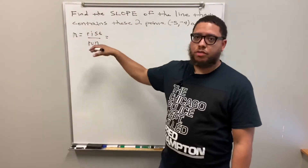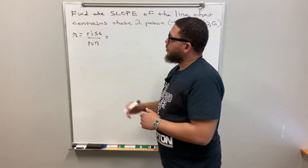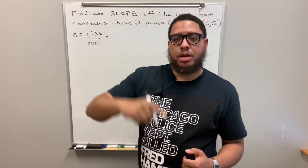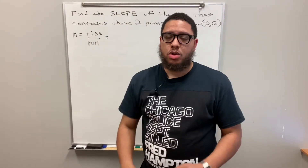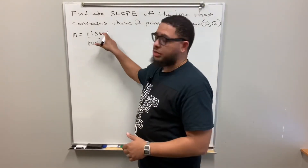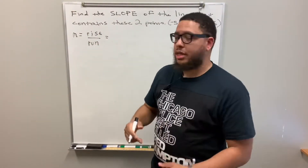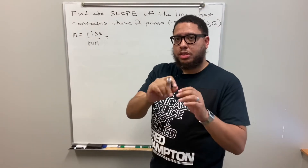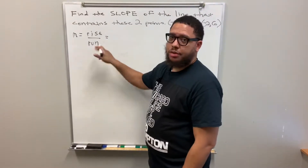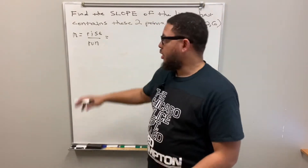What does rise over run mean? If you start out at one point on a graph, in order to get to the next point you have to travel a vertical distance — that could be up or down. Your rise: if it's positive you move up, if it's negative you move down, and if it's zero you stay at that vertical level.